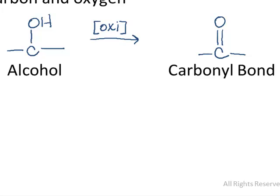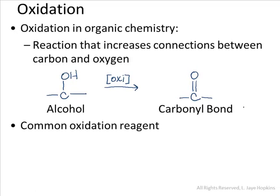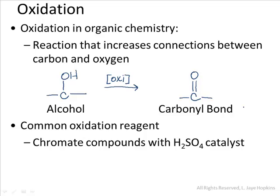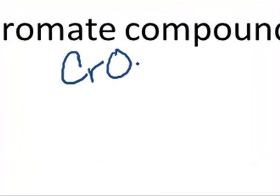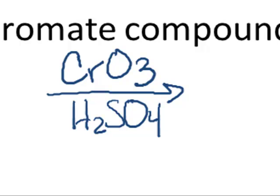As far as the oxidizing agent that's used, it depends on what you're starting with and what you wish to end with. A very common oxidizing agent for these reactions is chromate compounds, specifically a chromate compound in the presence of an H2SO4 catalyst. Chromate compounds contain the chromium atom bonded to some number of oxygen atoms, and the most general way to show that is by writing the chemical formula CrO3. In the case of an oxidation reaction, we'd write CrO3 along with the H2SO4 to show the catalyst. This is probably the easiest oxidation reagent for us to memorize.